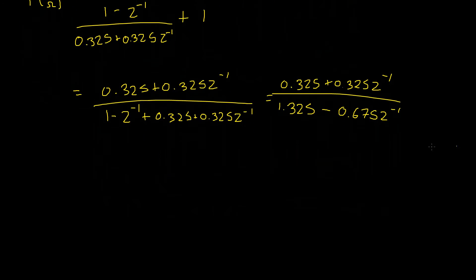Okay, so we essentially have the correct answer here. However, it's not in its normalized form. The normalized form for a digital filter is to have the coefficient of our z to the power of 0 term in our denominator, in other words, this 1.325, to have a value of 1. We can get that by dividing top and bottom by 1.325.